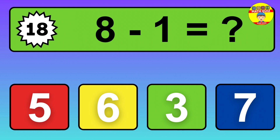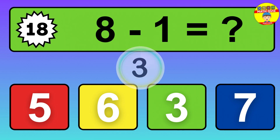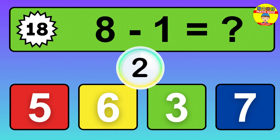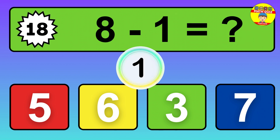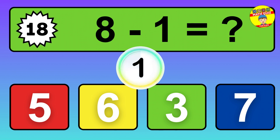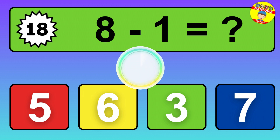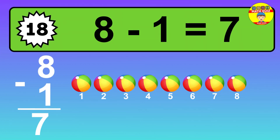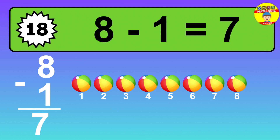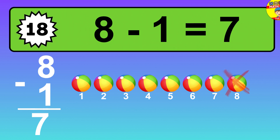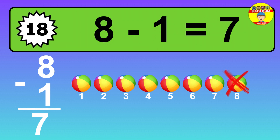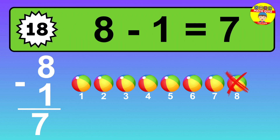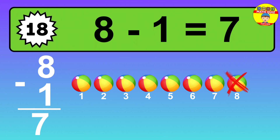Question 18. 8 minus 1 equals what? So the answer is 8 minus 1 is 7. Let's count it. 1, 2, 3, 4, 5, 6, 7.